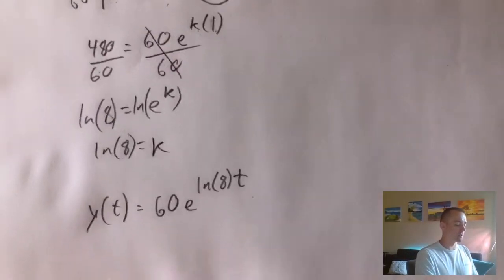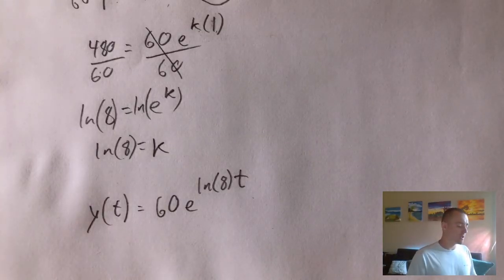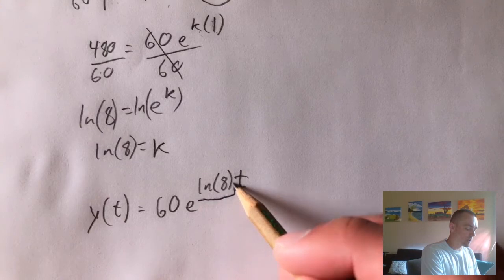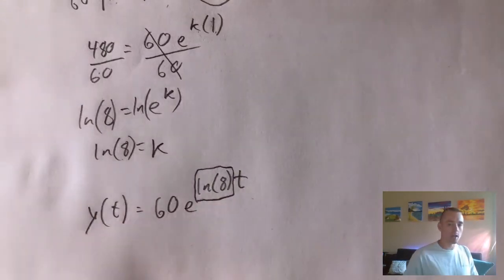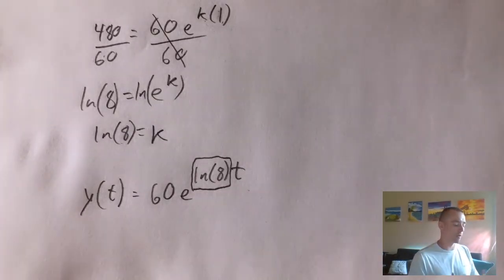So this would be an expression that would tell us the exact number of cells after t hours. So this is our solution to part B. Now to figure out our solution to part A, like I said, basically this number right here, what we got for k, that's going to be our relative growth rate. So what we want to do is figure out an approximation for what natural log of 8 is.